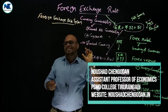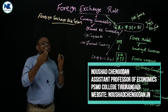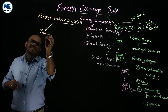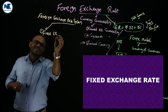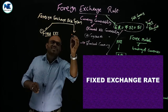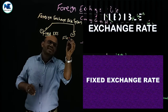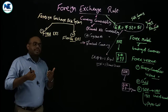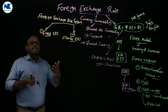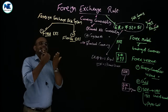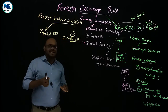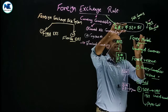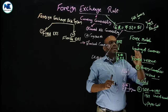Broadly, there are two systems. The first one is the fixed exchange rate system, and the second one is the flexible exchange rate system. Foreign exchange rate system means a pattern or system we are following in determining your currency's value in terms of foreign currency. The foreign exchange rate shows the value of home currency in terms of foreign currency.